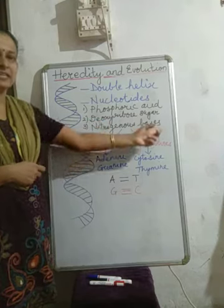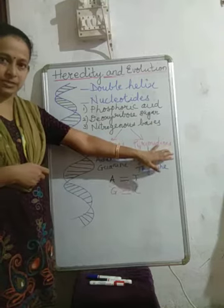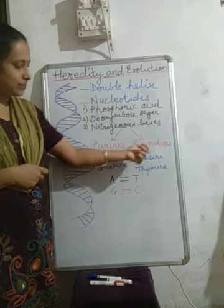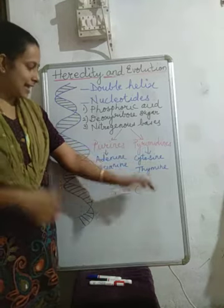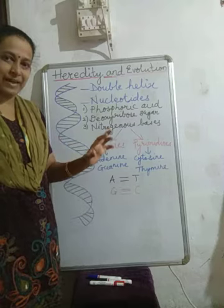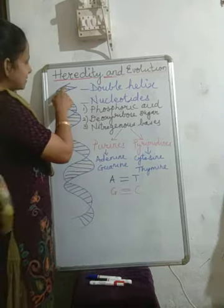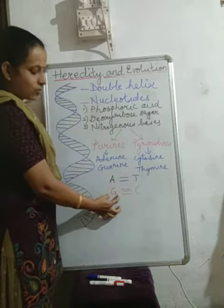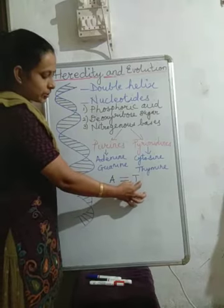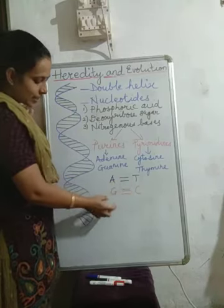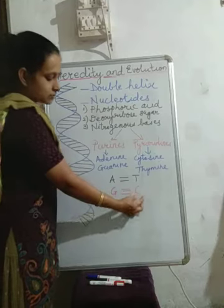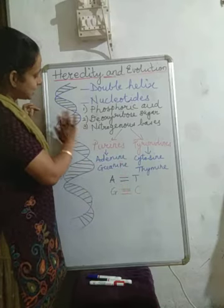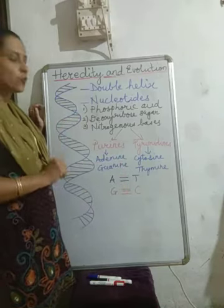Purines are of two types: adenine and guanine. Pyrimidines are cytosine and thymine. The nitrogenous base pairing is: adenine always pairs with thymine, and guanine always pairs with cytosine. Adenine is bonded to thymine with double hydrogen bonds, whereas guanine is bonded with cytosine with triple hydrogen bonds. This is the double helix DNA model proposed by Watson and Crick.